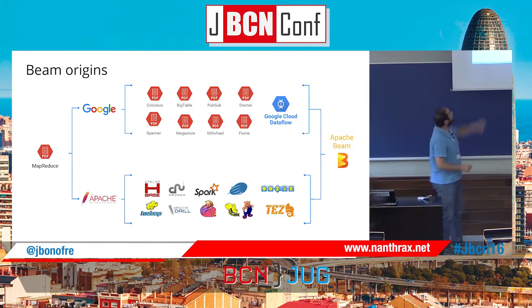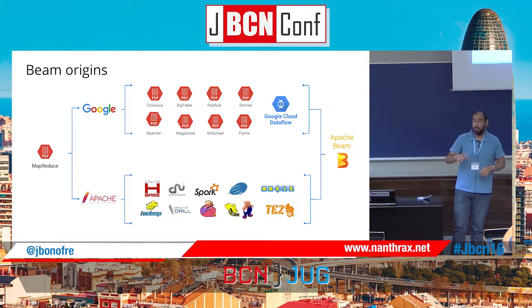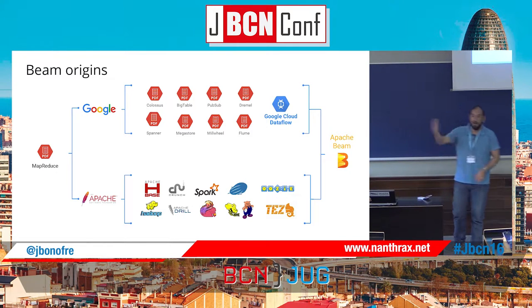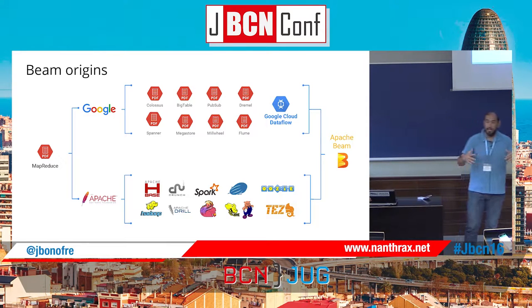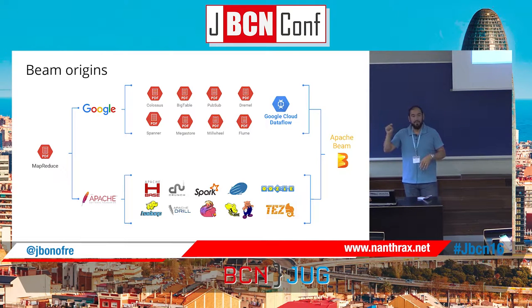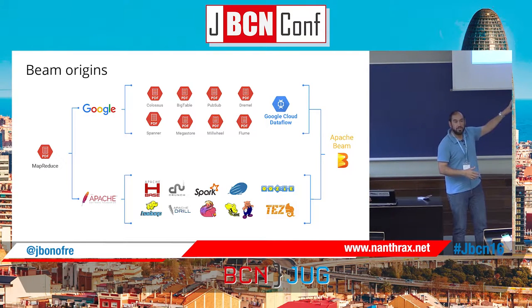Where does Apache Beam come from? The first event was around 2003 when Google created the MapReduce paper. The implementation was done at Google but was not public. On the other hand, Apache projects implemented MapReduce — Hadoop, YARN, all this stuff. But now both Google and Apache projects joined together to provide Apache Beam. Apache Beam comes from Google — for those who know Google Cloud Dataflow SDK, it's basically the Beam SDK. Google decided to give the SDK to Apache, to have the same programming model covering any kind of framework and execution runtime.